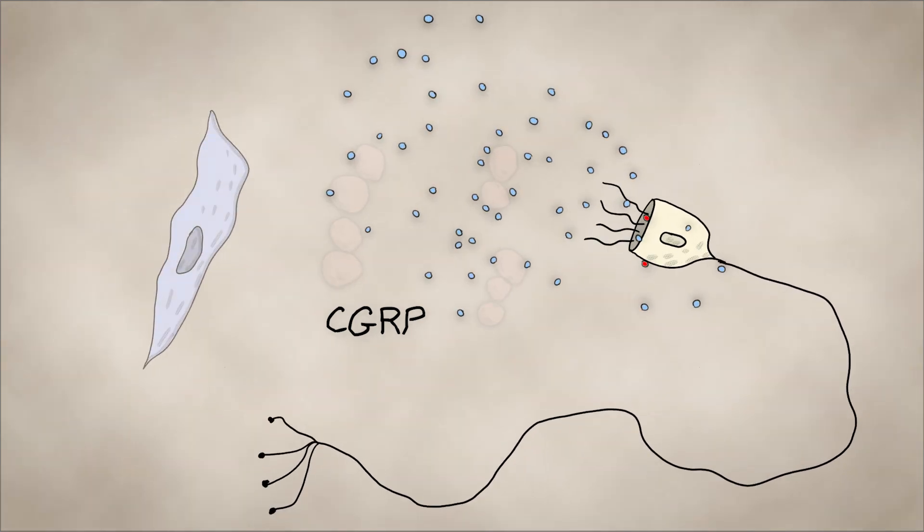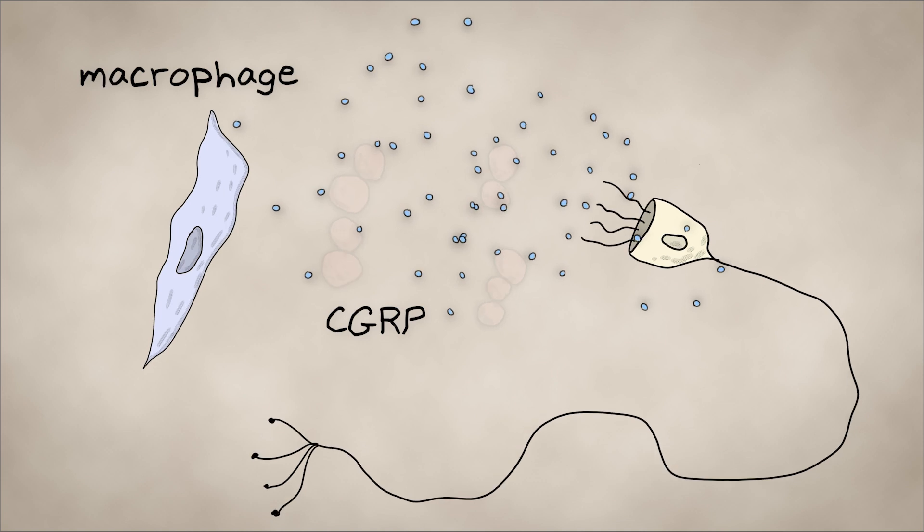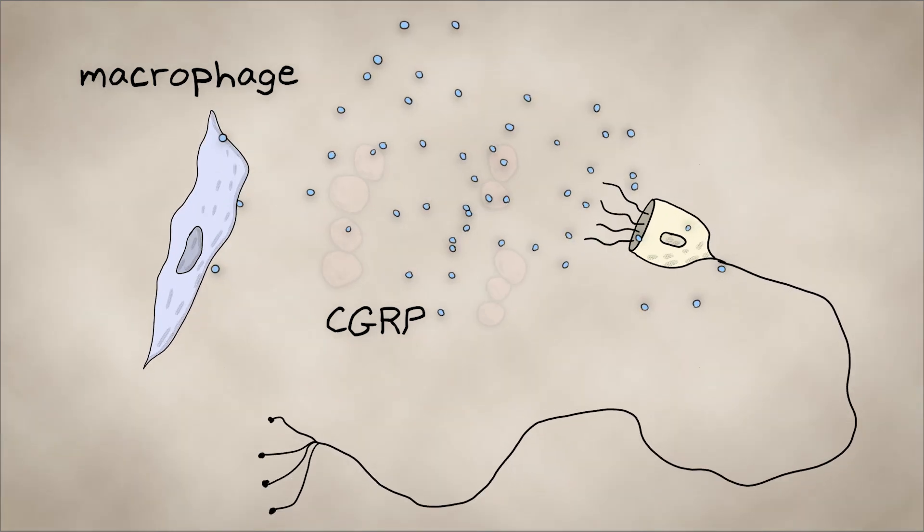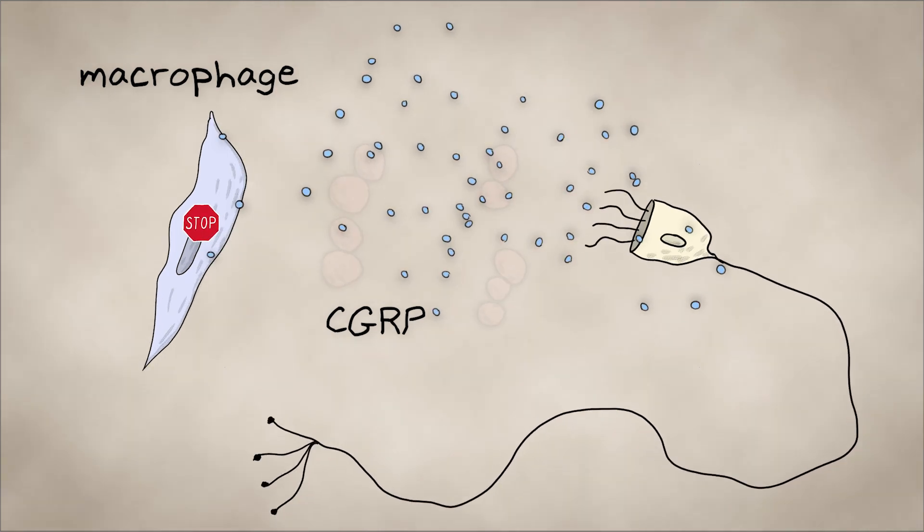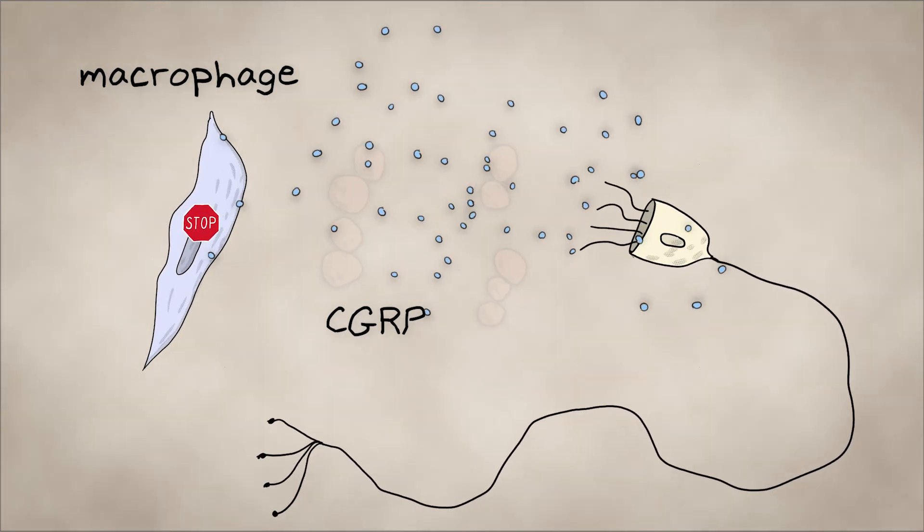CGRP attaches to receptors on immune cells called macrophages, which typically disarm invaders and summon other immune cells to help. But CGRP disables these immune cells and prevents them from engulfing the bacteria and from sending the distress signal to the immune system.